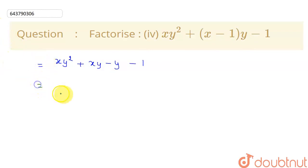Now what I can do? Let me take xy common from these two terms. If I take xy common, I will be having y only plus from here, I will be getting 1. Now, let's take minus 1 common from these two terms. After taking minus 1 common, this is giving me y plus 1.